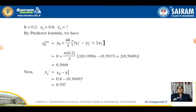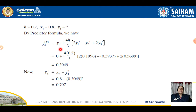Now let us substitute these values in the formula. For the Predictor Formula, we need h = 0.2, and x₄ = 0.8 at which we find y₄. The Predictor Formula is y₄p = y₀ + (4h/3)(2y₁' − y₂' + 2y₃'). Substituting the known values of y₀, y₁', y₂', y₃' and simplifying, y₄ predicted = 0.3049.